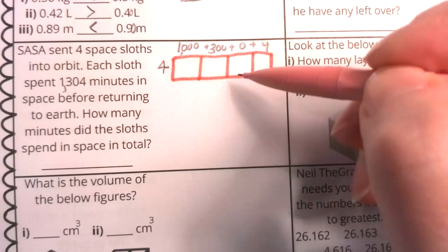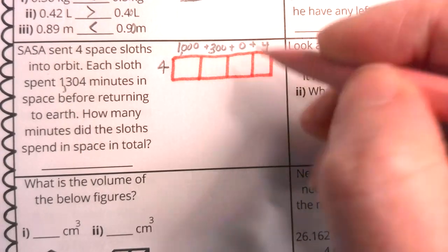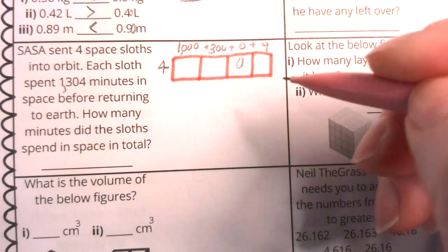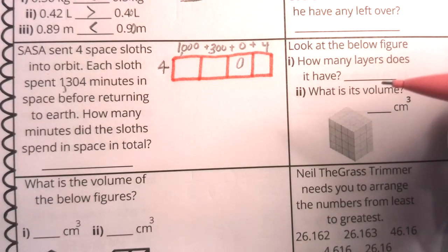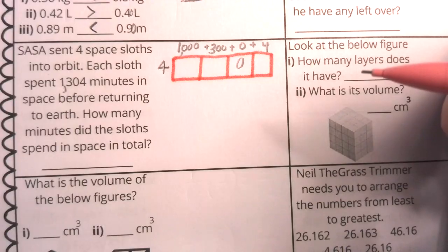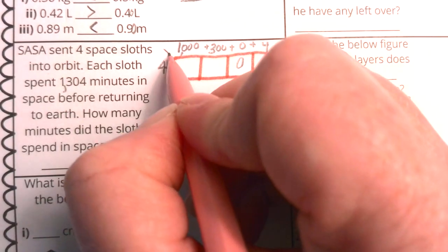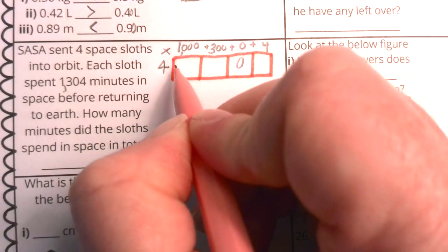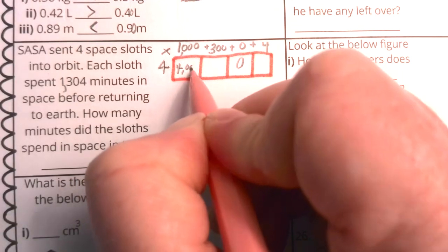Now, yes, you could really skip this column since it's a zero. Anything times zero will be zero, but I went ahead and included it just for the sake of helping you to see how you break that apart into its values. Now, we're going to multiply. Four times 1,000 is 4,000.